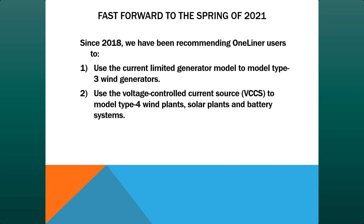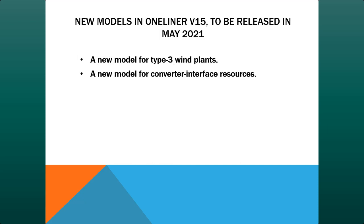That's been our recommendation since about three years ago. Now in 2021, we have developed two new models: a new model for type 3 wind plants, and a new model for converter interface resources. These two models are scheduled to appear in version 15 of Aspen One-Liner.